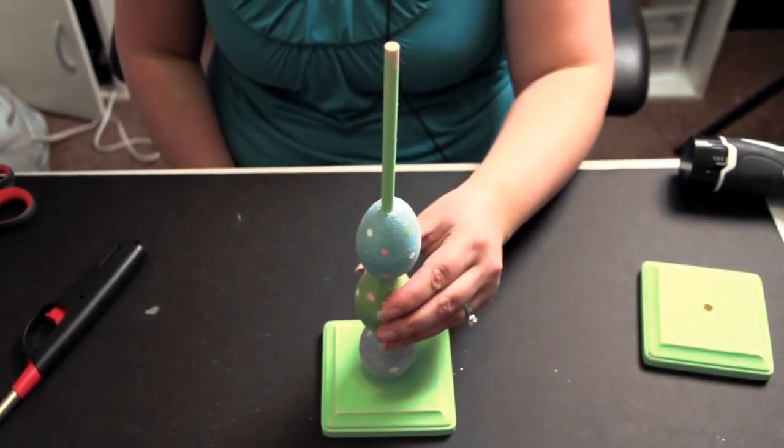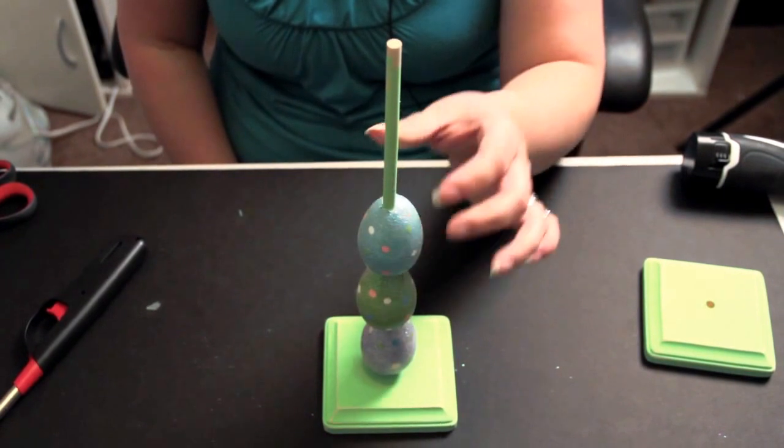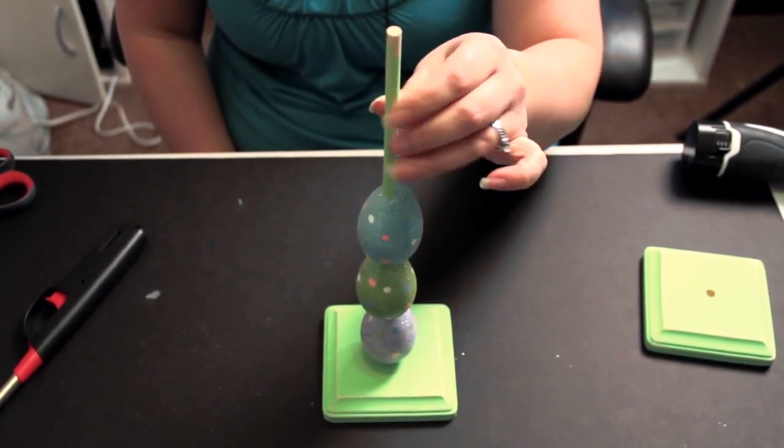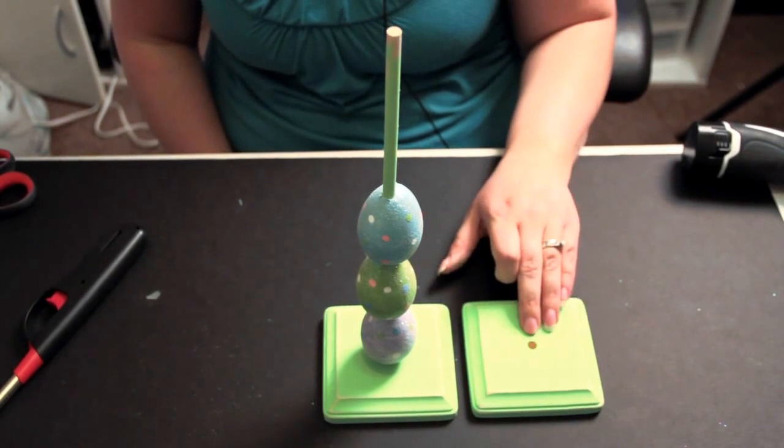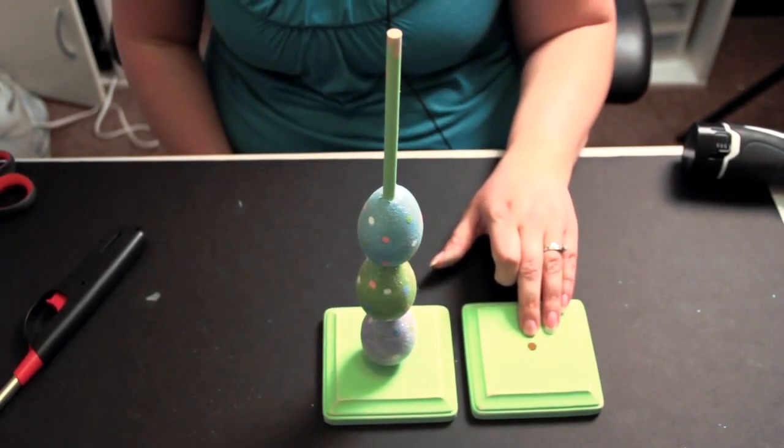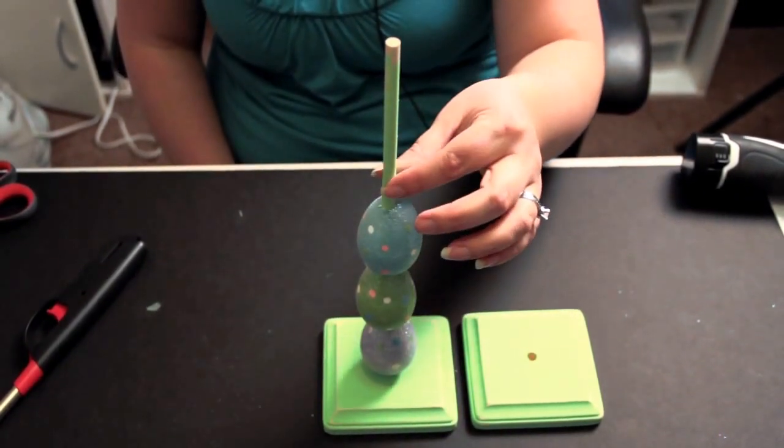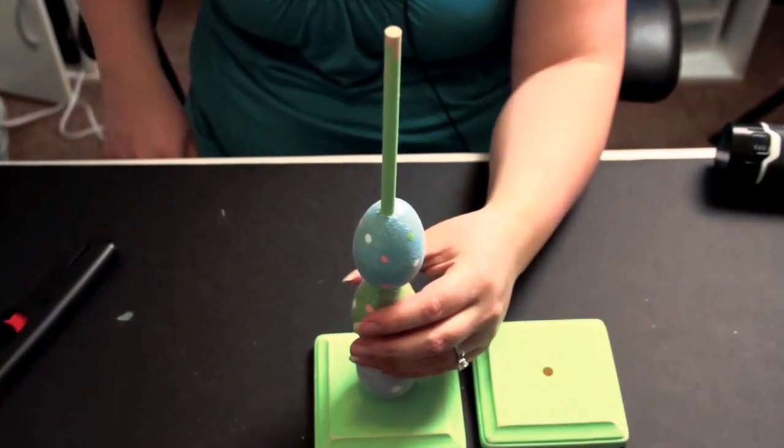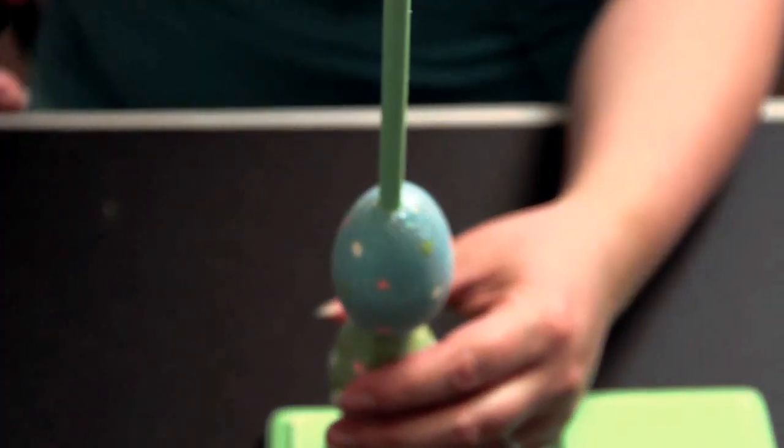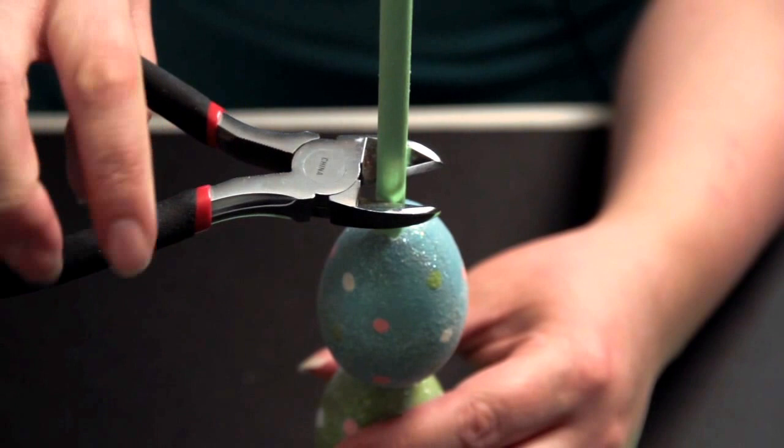Now that all of my eggs are on the dowel, I'm going to cut the remaining dowel off. The hole I drilled is just under a half of an inch deep, so I'm going to just estimate on this about a half of an inch up, a little less than half of an inch, and I'm just going to cut it off using some wire cutters.